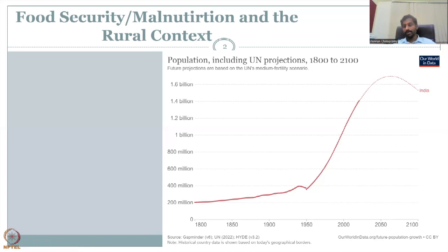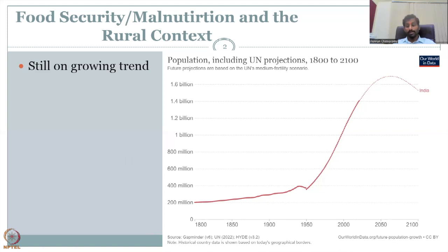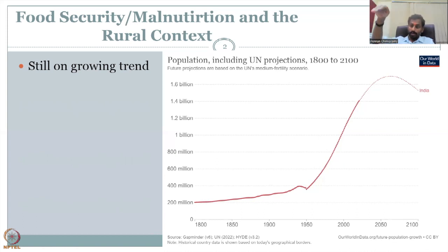India's population will hopefully come down as well. We should understand that population has increased not only because of having more children, but also due to advancements in science and technology that have saved many lives — the death rate has come down while population is still increasing. We cannot expect a sudden tapering off; it will be slowly growing and then slowly coming down.